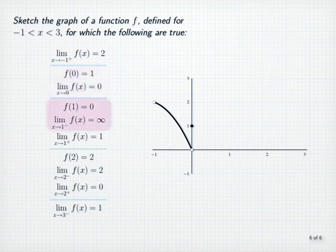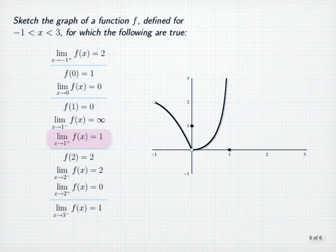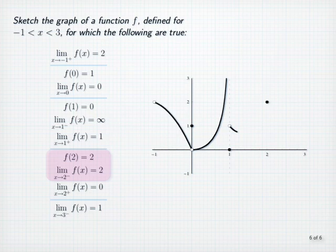Next, we plot a point at 1, 0, and we note that the infinite left-sided limit at 1 means that the line x equals 1 is a vertical asymptote. Since f of x approaches positive infinity as x approaches 1 from the left, and again using the fact that the limit at 0 is 0, we conclude that the graph might look something like this between 0 and 1. Next, let's use the fact that the limit as x approaches 1 from the right is 1 to continue the graph past 1. The value at 2 and the left-sided limit as x approaches 2 are both 2, so we plot the point 2, 2, and then sketch the graph for x between 1 and 2 something like this.